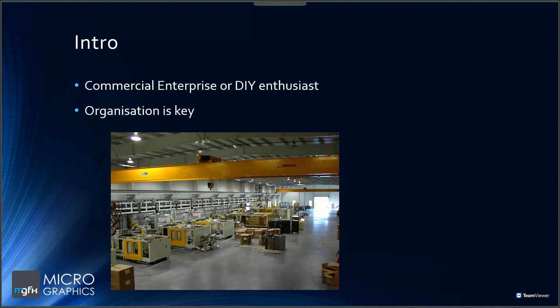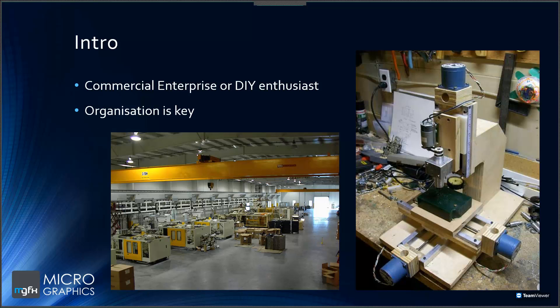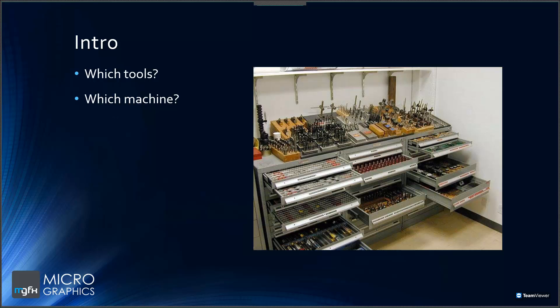Whether you are operating as a commercial enterprise with a large machine shop with many machines — a mix of milling, turning, three-axis, five-axis simultaneous — or you're just a casual DIYer in the garage, this webinar will show you how libraries can help you organize your data inside of Fusion 360. Imagine you have a part that needs programming and you want to know what tools are available — what end mills and other tools you can actually use to make the best decision on how to program that path.